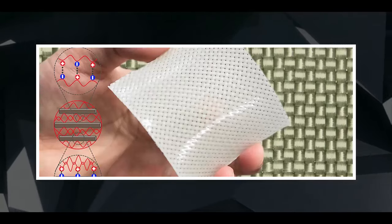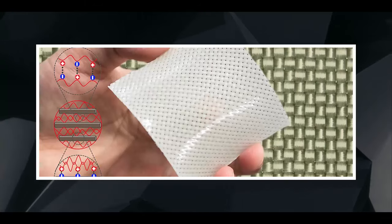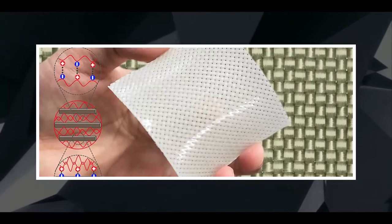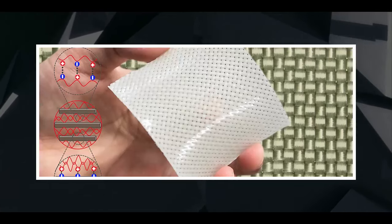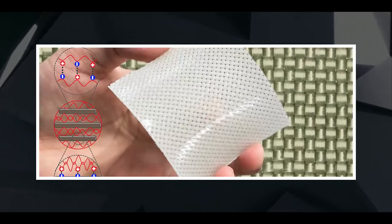That combination of properties means the new fabric could be used as the basis for artificial ligaments and tendons designed to help the body heal, or in manufacturing or fashion where a very tough but elastic material is needed.